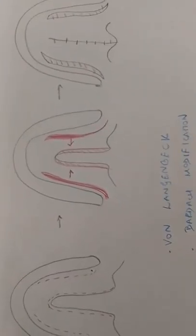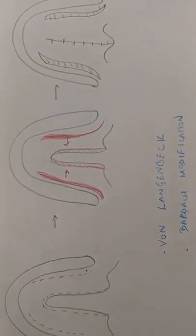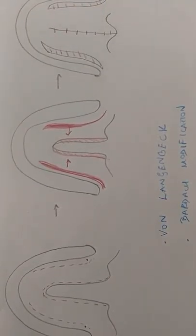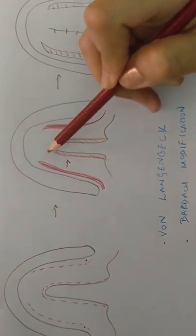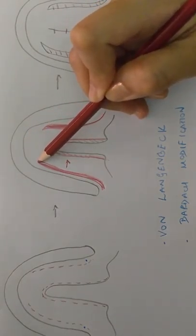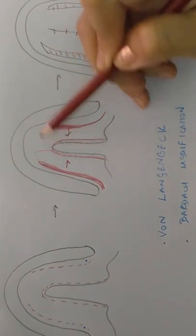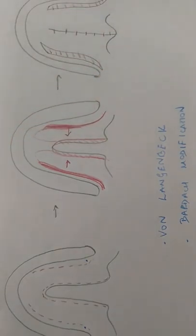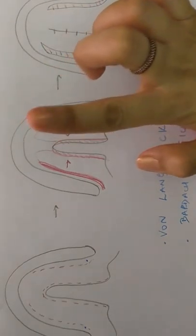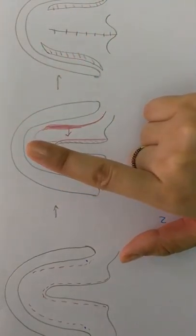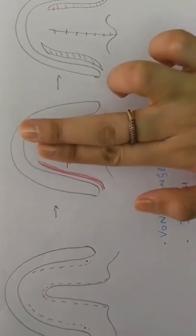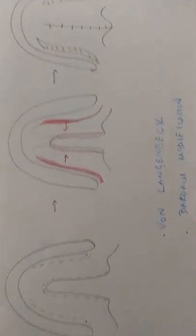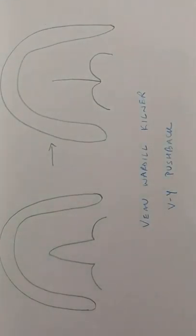There's a modification of von Langenbeck technique, which is the Burdak modification. Burdak advocated that in certain cases where the clefts are wide and much mobility may not be obtained, these flaps can be converted into unipedical ones. The flaps will be extended and elevated anteriorly, then brought into the midline and closed. But ultimately the lateral raw areas will remain.